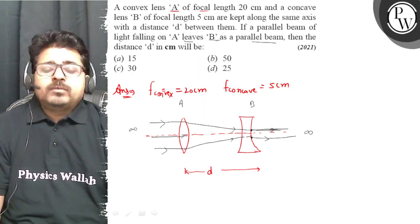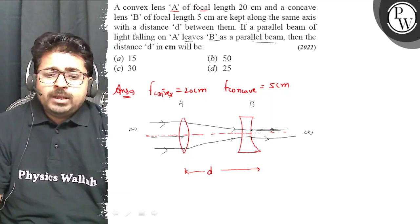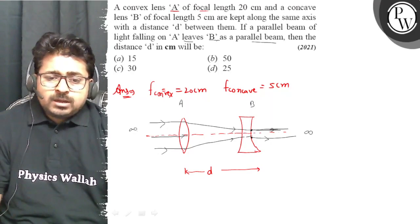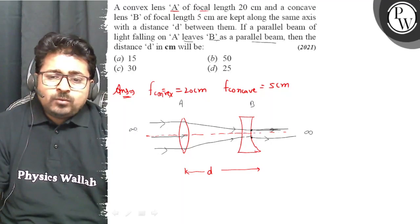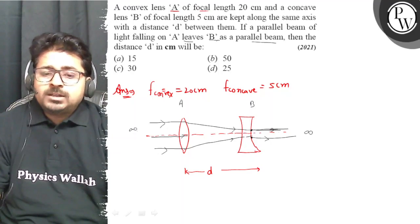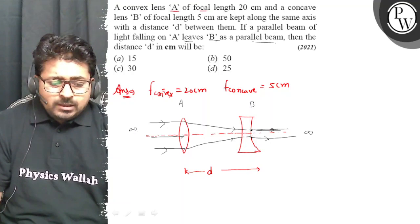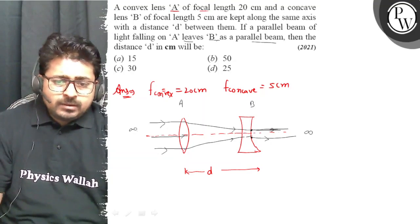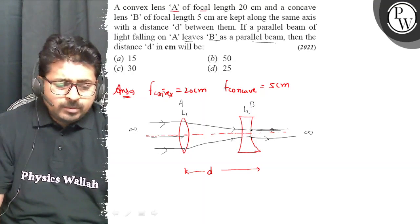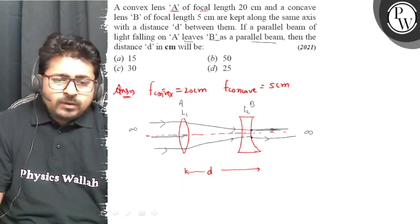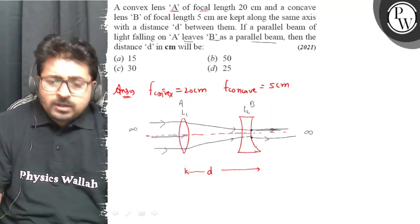For the convex lens, the object is at infinity so the image forms at its focal point. The image formed by lens L1 acts as the object for lens L2. The image formed by L1 becomes the object for L2.